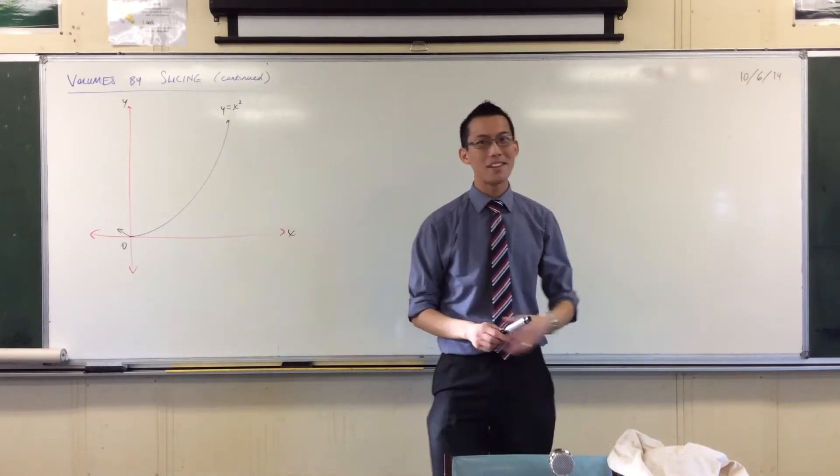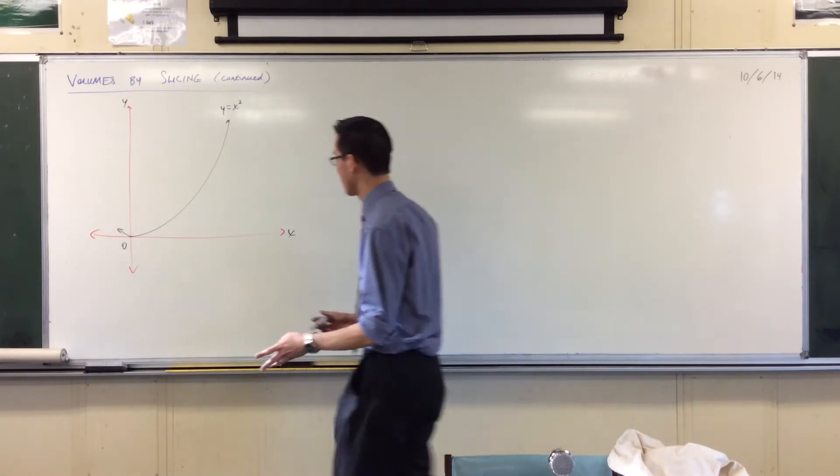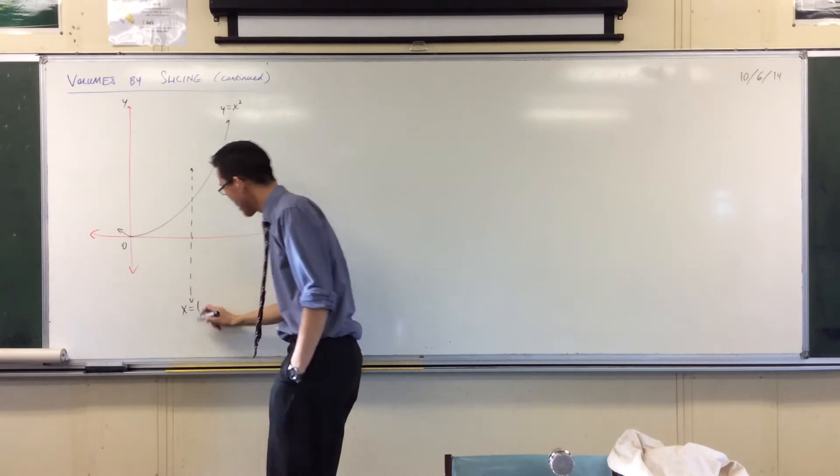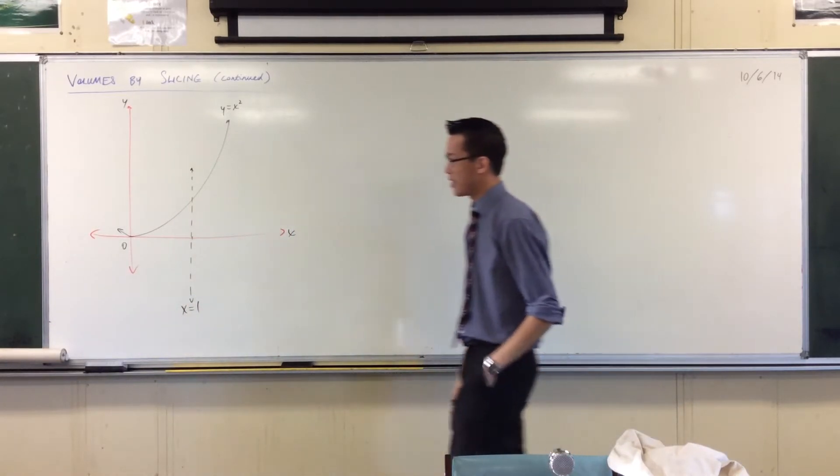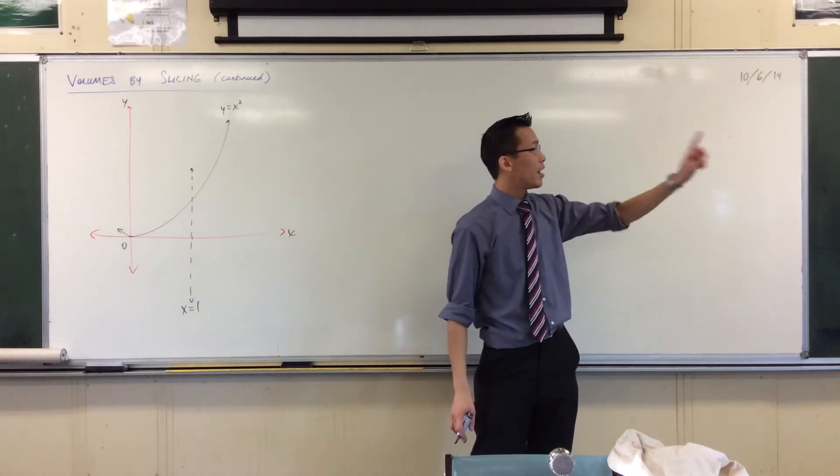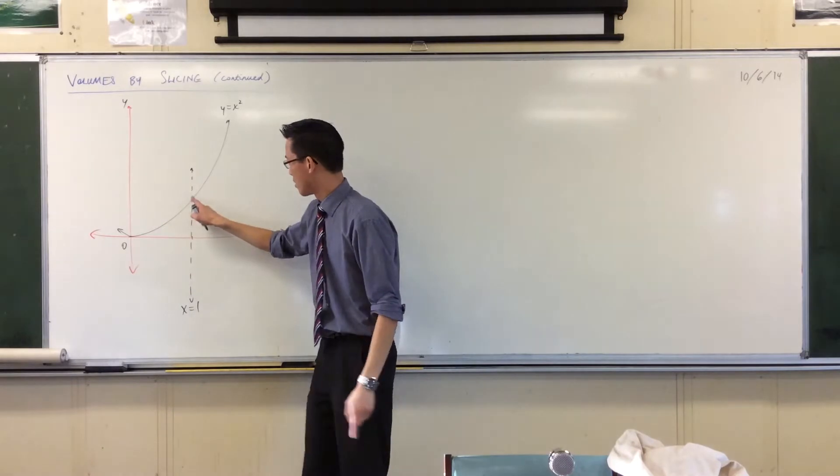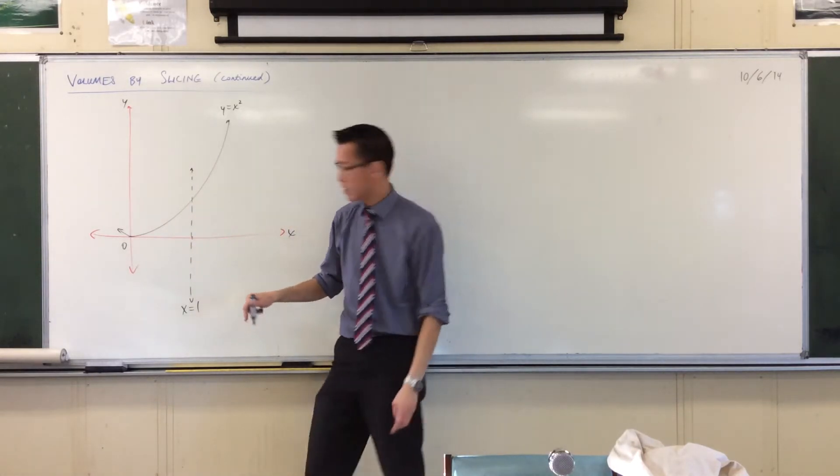But then they say, okay, now do it around the line, sorry, x equals 1. So let's draw that in and see how this fits. So if I make that x equals 1, you can see that it's the area bounded by the curve there, the x-axis there, and the line x equals 1.